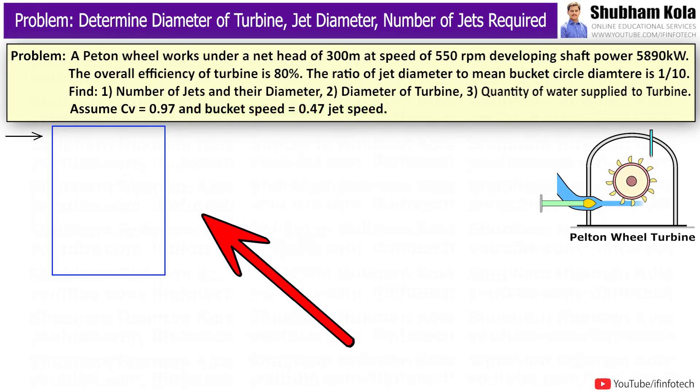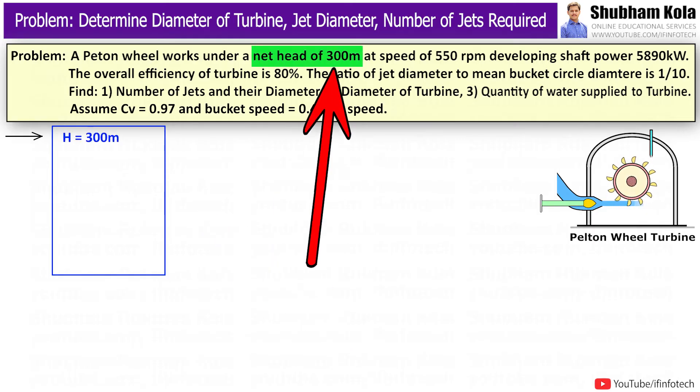First, I will write the given data which has been provided in problem. Net height H equals 300 meter.